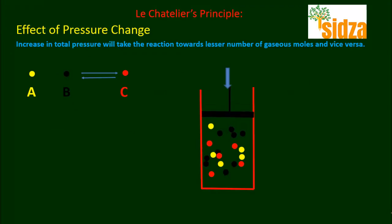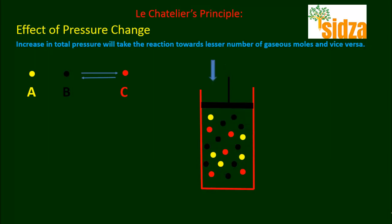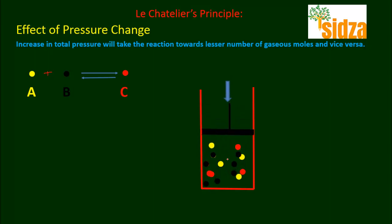Now let's understand the effect of pressure on the state of an equilibrium. Suppose we have a system: A plus B reacts and forms product C, and product C again decomposes back to the A and B reactants. Now if I decrease the volume on this system, the pressure inside is going to increase.